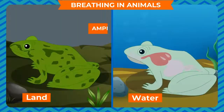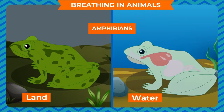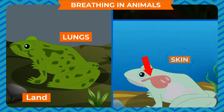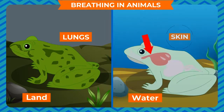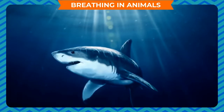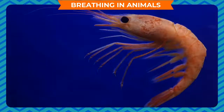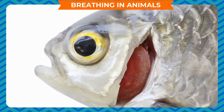Some animals such as earthworms and frogs spend part of their life on land and part underwater — they are called amphibians. These animals breathe through gills in the water when they are young. As they grow into adults, they breathe through their lungs on land and through their skin in the water.